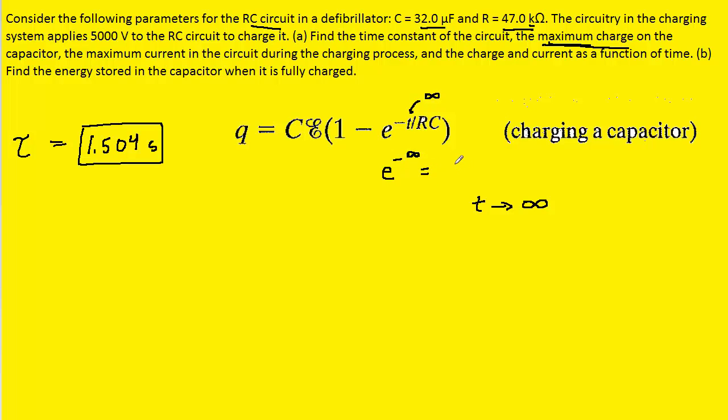e to the negative infinity is equivalent to 1 over e to the positive infinity. This is like saying we're dividing the number 1 by an extremely big number, and when we do that, that approaches 0. So, basically, this term drops out, and we are left with the charge on the capacitor, again, after a very long period of time, equaling the capacitance times the potential difference that is supplied by the battery. Here, we would just have 1 minus 0, but 1 minus 0, of course, is just 1, so we can omit that.